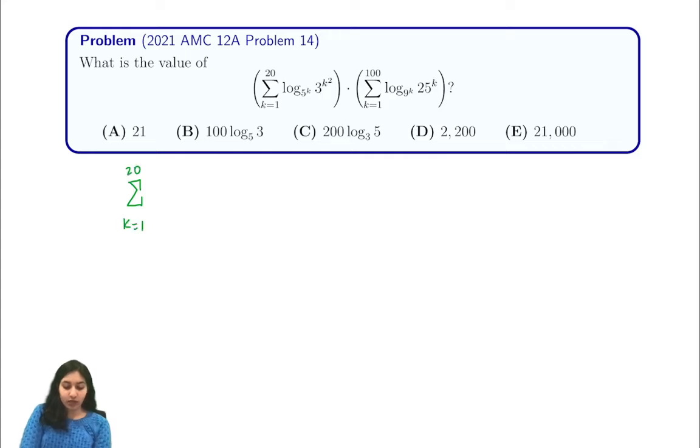So the first thing that we do is we express 3 to the k squared as 3 to the k times k, and we can write it like this. Now by our exponent rules our k can be pulled out of our expression.